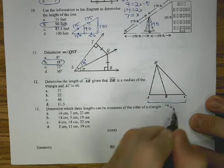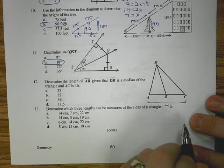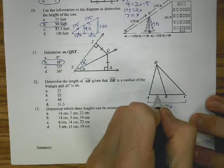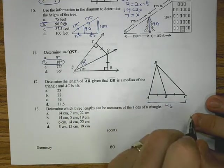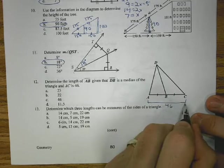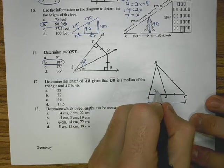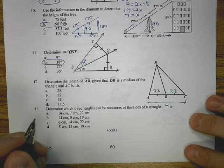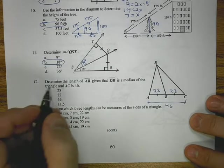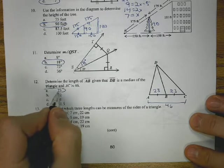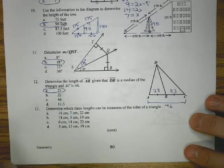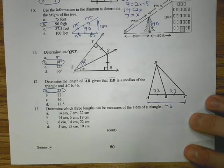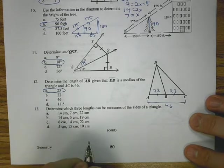Number 12, determine the length of AB given that DB is the median and AC is 46. So if AC is 46 and DB is a median, what we know about a median is it goes from a vertex to a midpoint. So this point B is the midpoint. 46 is the whole thing, I divide it by 2, and I get 23 and 23 for each part, which means AB is 23.